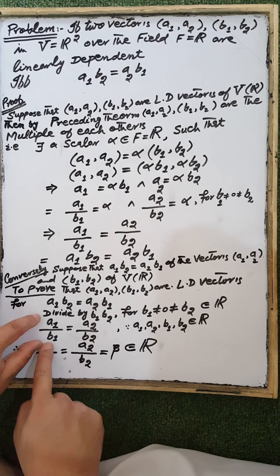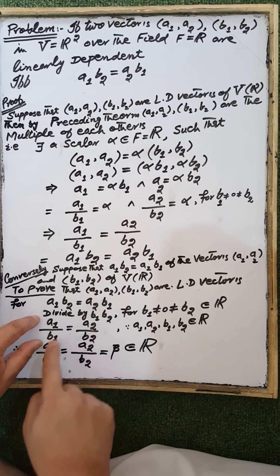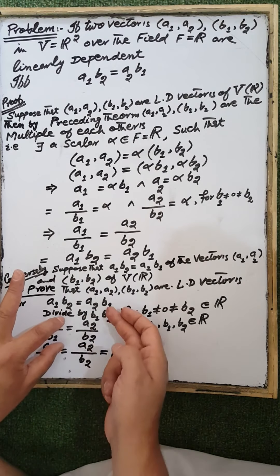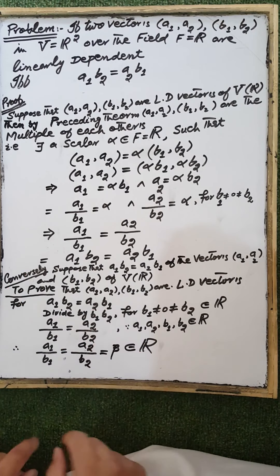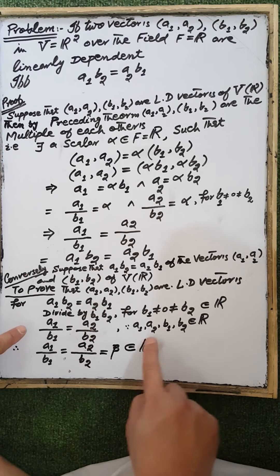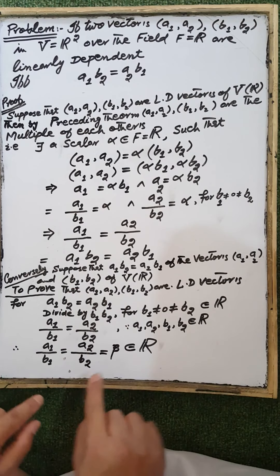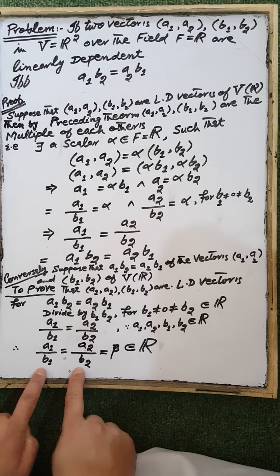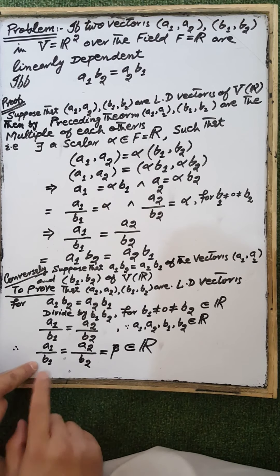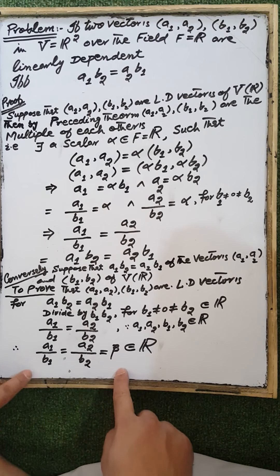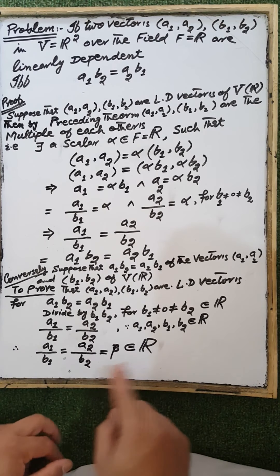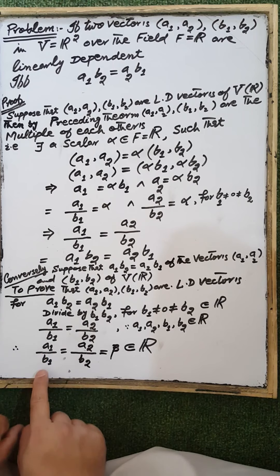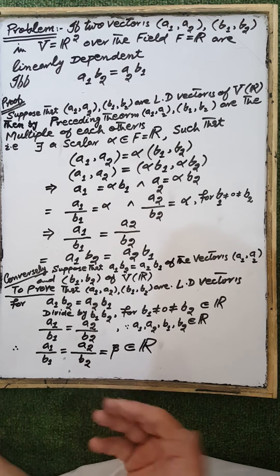We have a1·b2 divided by b1·b2 — cancelling b2 with b2 — equals a2·b1 divided by b1·b2 — cancelling b1 with b1 — giving a1/b1 = a2/b2. Now, a1, a2, b1, b2 are coordinates of these vectors and are real numbers, and we supposed b1 and b2 are nonzero quantities. Therefore, dividing any real number by another nonzero real number gives a real number. Let that real number be beta, so a1/b1 = beta and a2/b2 = beta.